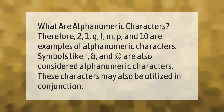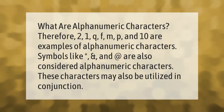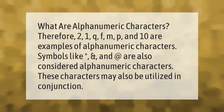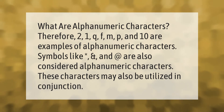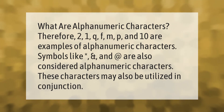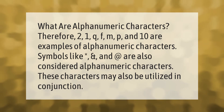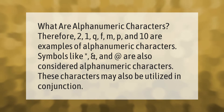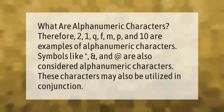What are alphanumeric characters? Examples of alphanumeric characters include 2, 1, q, f, m, p, and 10. Symbols like asterisk are also considered alphanumeric characters, and these characters may also be utilized in conjunction.